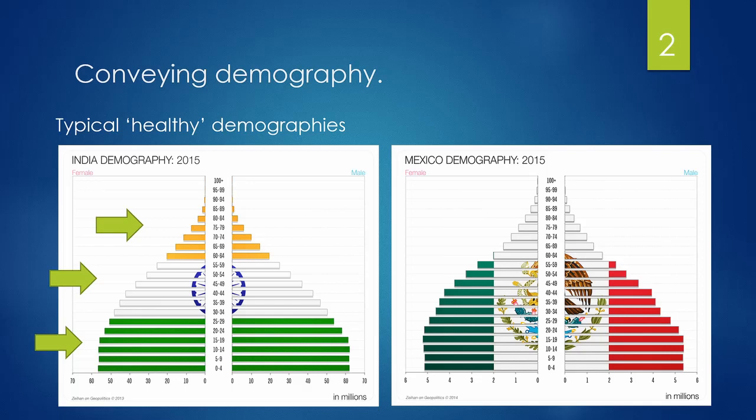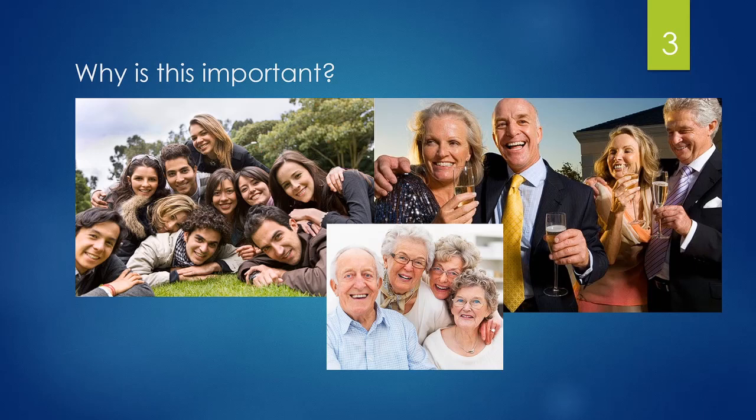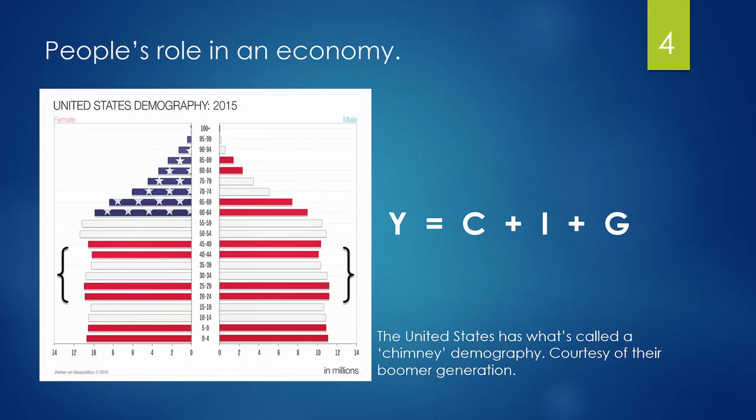Ageing populations are important in analysing a nation's economy because of the simple fact that we as individuals interact with our economy differently depending on what age group we belong to. Firstly, you have your young workers — people roughly aged between 20 to 45. This segment of the population are in the stages of going to university, having kids, buying houses, cars, etc. This population accounts for most of the consumption and growth in a consumer-led economy.